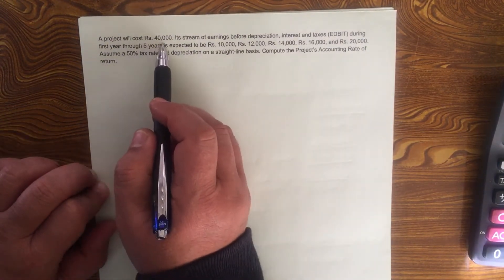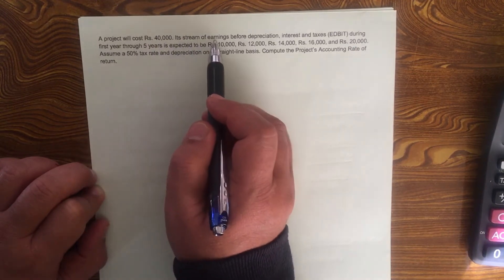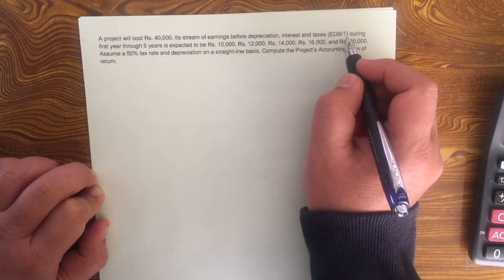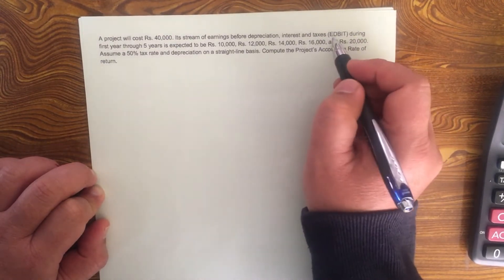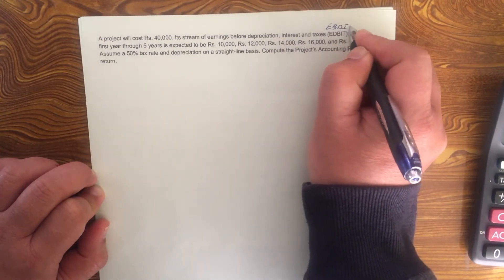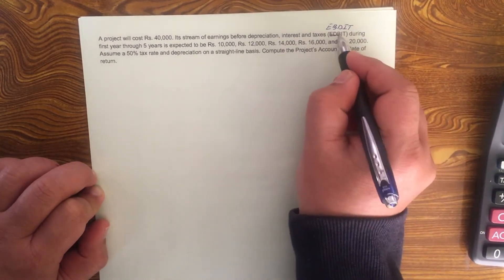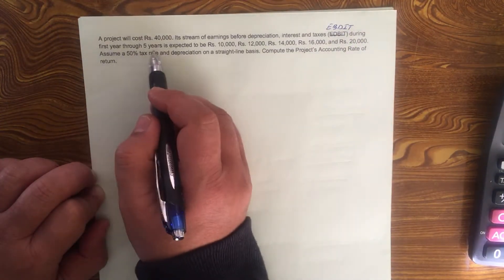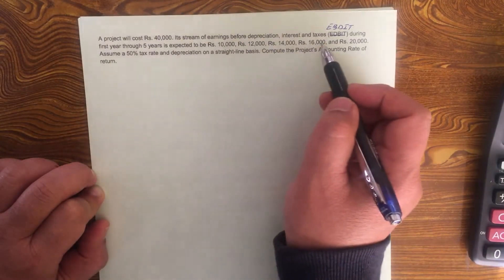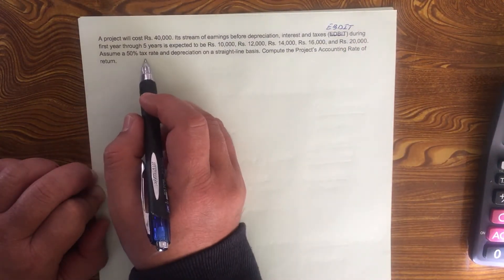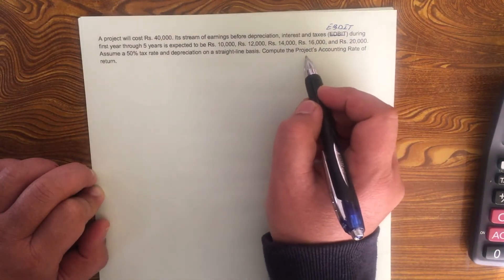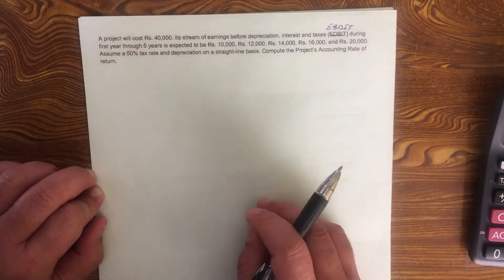A project will cost Rs. 40,000. Its stream of earnings before depreciation, interest and taxes, EBDIT. There's a mistake here, it has to be EBDIT and not EBIT. During the first year through five years, it's expected to be 10,000, 12,000, 14,000, 16,000 and 20,000. Assume a 50% tax rate and depreciation on a straight line basis. Compute the project's accounting rate of return.